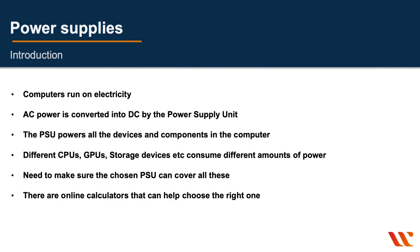We'll explore power supplies. Computers run on electricity like most consumer electronic devices. There is AC and there is DC, and the AC power is converted into DC by the power supply unit, also known as the PSU. This powers all the devices and components in the computer — different CPUs, GPUs, and storage devices all consume different amounts of power. There are online calculators that help you choose the correct PSU for your new build.